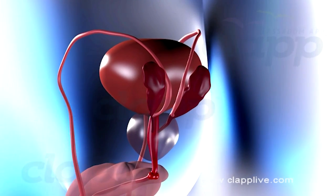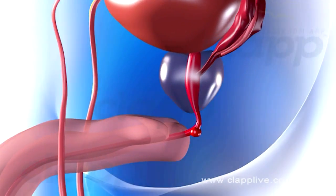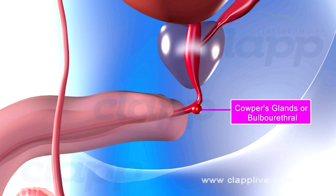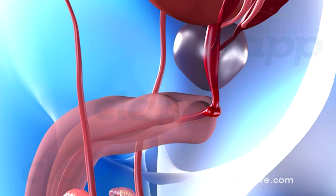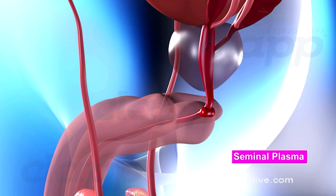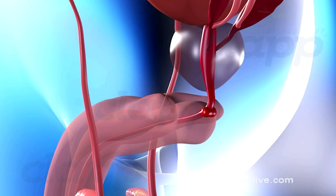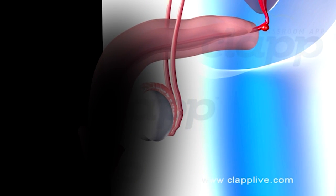Cowper's glands, or bulbourethral glands, are pea-sized glands lying at the base of the penis and open directly to the urethra. Their alkaline secretion acts as a lubricant for the penis and also neutralizes the acidity of any urine traces left in the urethra. This secretion is produced during sexual excitation. Secretions of all these glands are collectively called seminal plasma. Sperms along with seminal plasma constitute semen, and the average volume of semen in an ejaculation is 2.5 to 5 milliliters. In males, both urine and semen pass through the urethra.